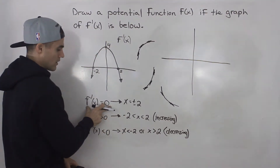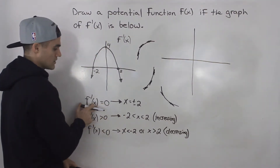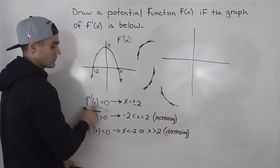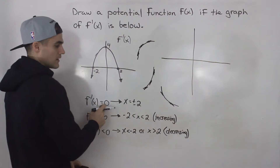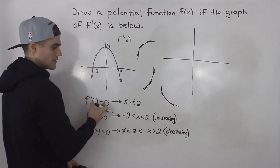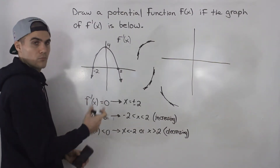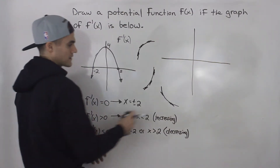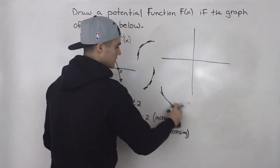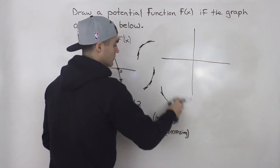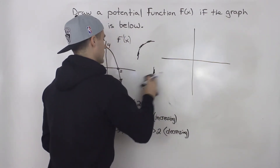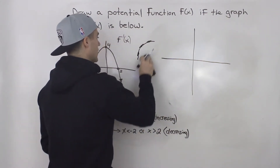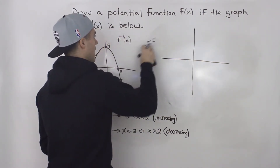And where the derivative is equal to zero, it means usually there's going to be a local minimum or maximum — there can also be a saddle point, but usually a local min or max.